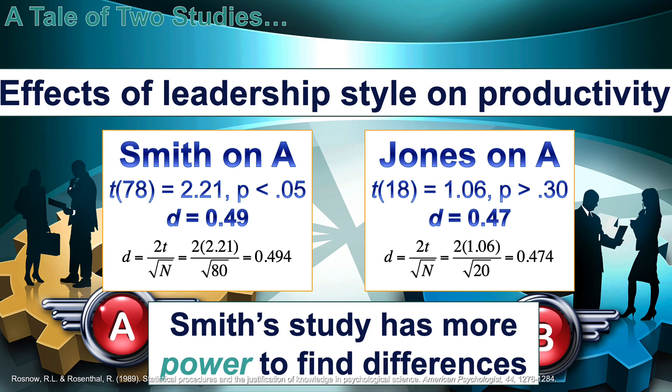The non-significance was not because Jones was measuring a smaller effect size, but because his sample size was so much smaller. In fact, the effect size measured by both Smith and Jones was functionally exactly the same.